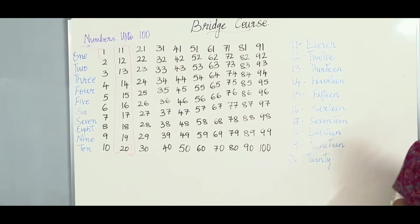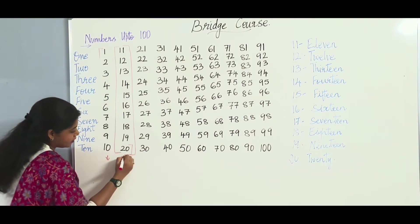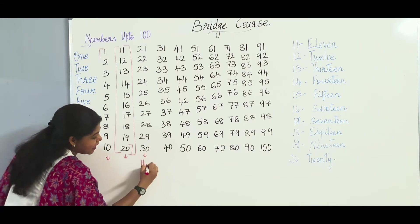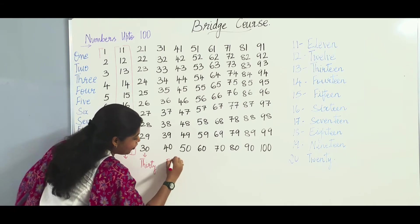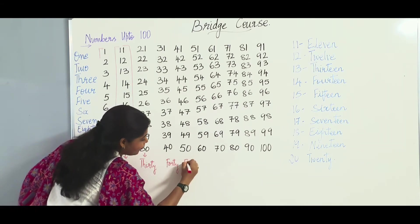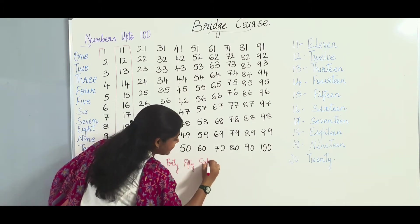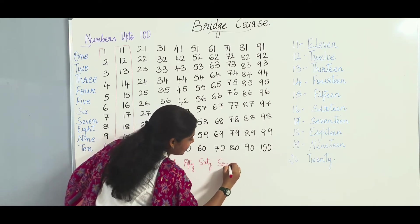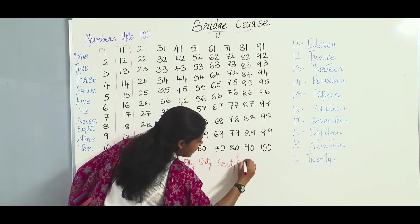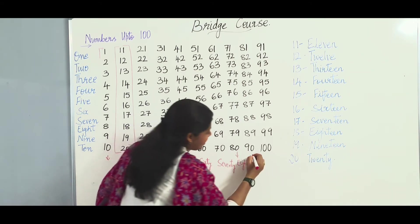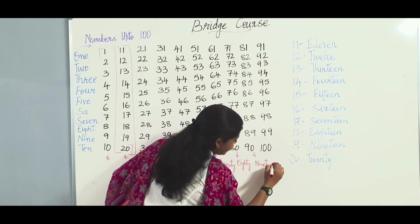Now let us see how we write the number names for the tens digits. From 30: T-H-I-R-T-Y 30, F-O-R-T-Y 40, F-I-F-T-Y 50, S-I-X-T-Y 60, S-E-V-E-N-T-Y 70, E-I-G-H-T-Y 80, N-I-N-E-T-Y 90.